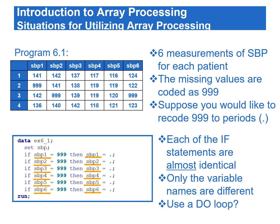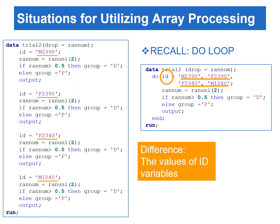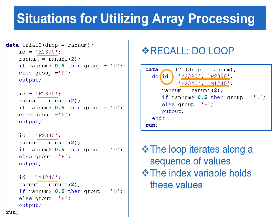We might think to use a do loop to simplify this program. Remember the program in the previous chapter — we had four almost identical blocks, where the only difference was the value of the ID variable. We simplified the program by enclosing the identical statements within a do loop, and the iterative do loop iterates the values of the ID variable.